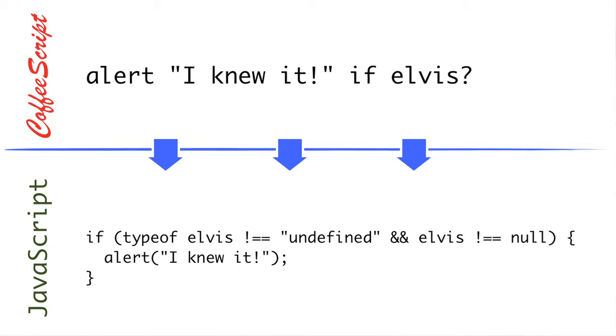Meaning that if it's either null or undefined, this entire line will not be executed. But if Elvis does have a value that's not undefined or null, the alert will be called.